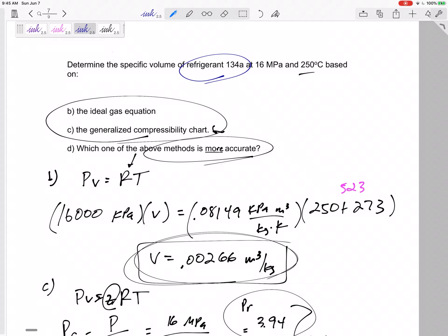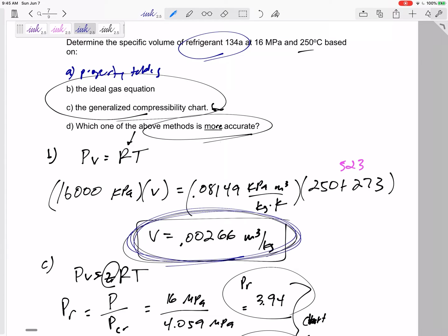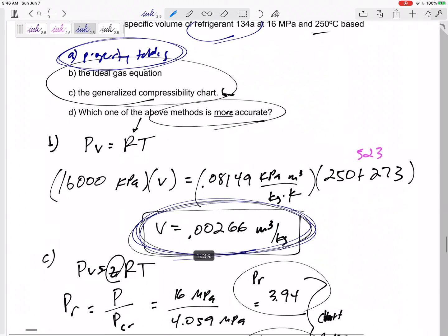All right, so be able to do this for refrigerant or water, English units or SI units, and be able to do it three ways if I ask you to: property tables, the ideal gas equation, ideal gas equation with compressibility. I'll make sure you know which is most accurate, which is least accurate. Also be able to calculate the error. If I ask for the percent error, then you would take this value right here minus the most accurate property table value, divided by the property table value, and give me a percent error.